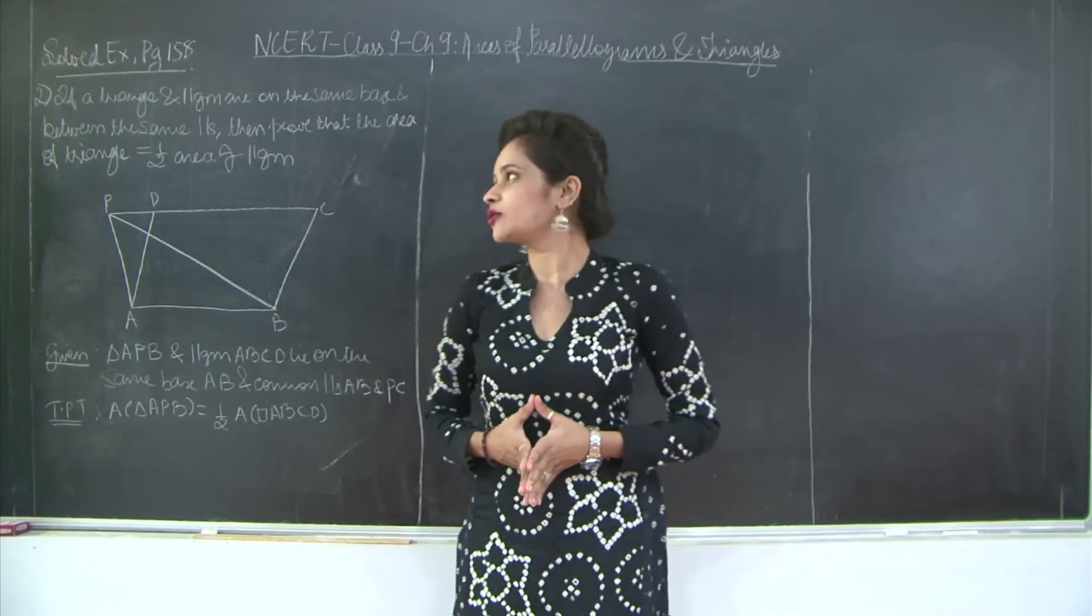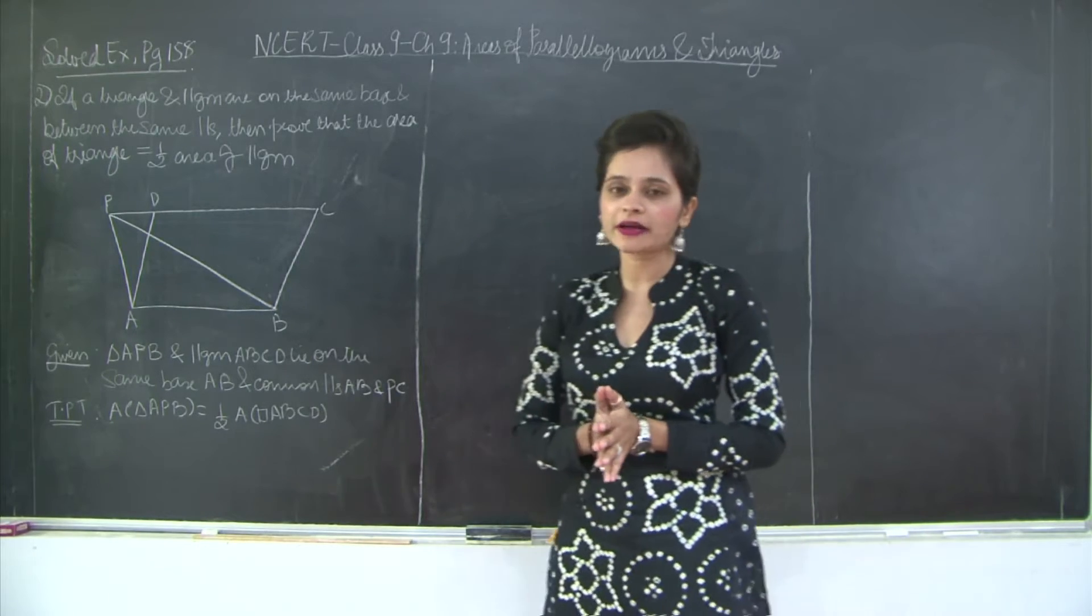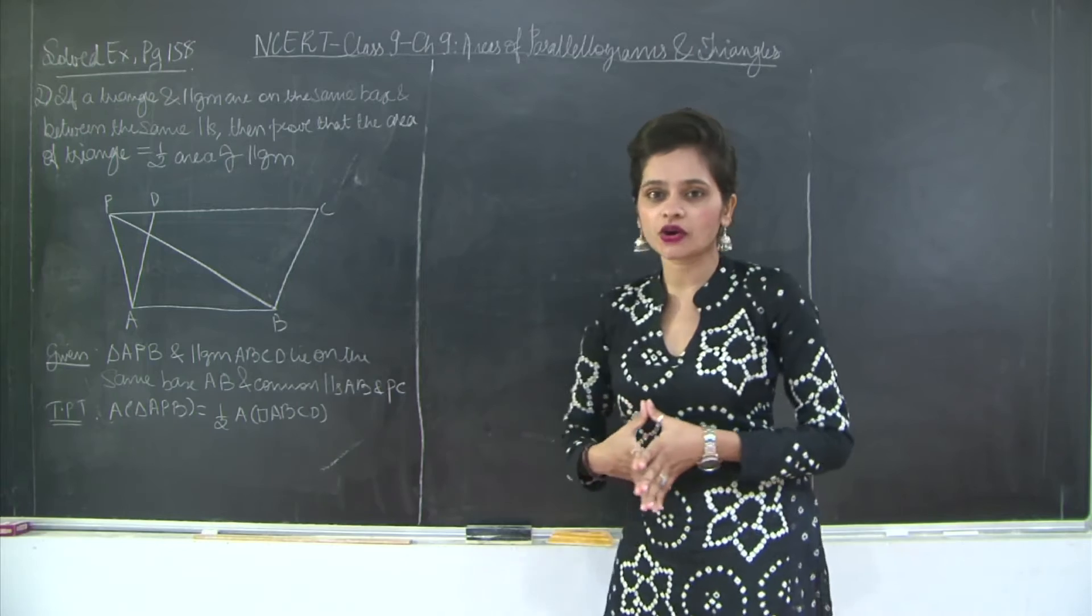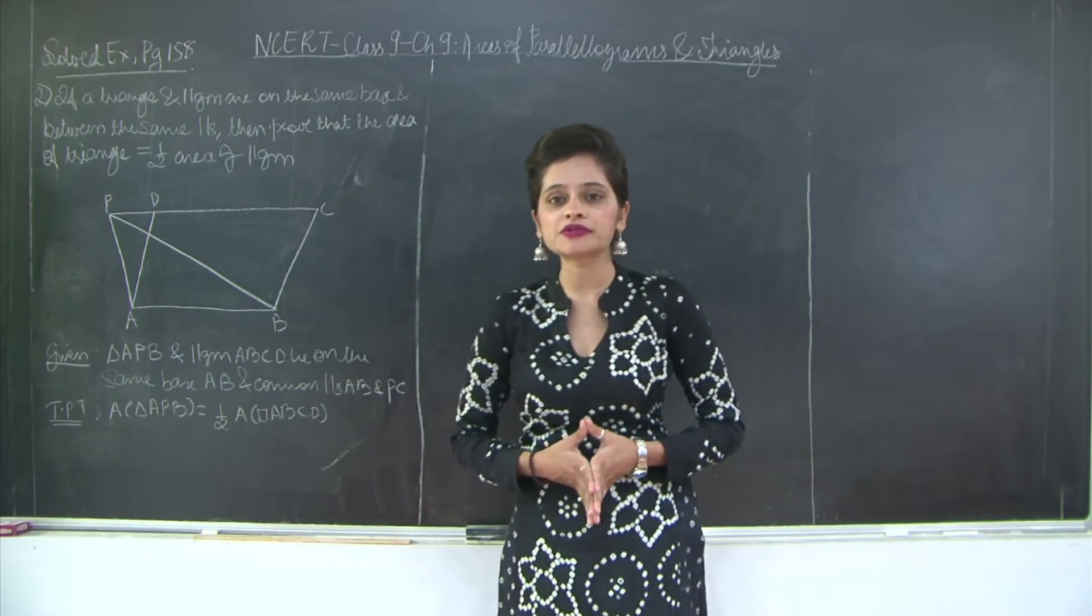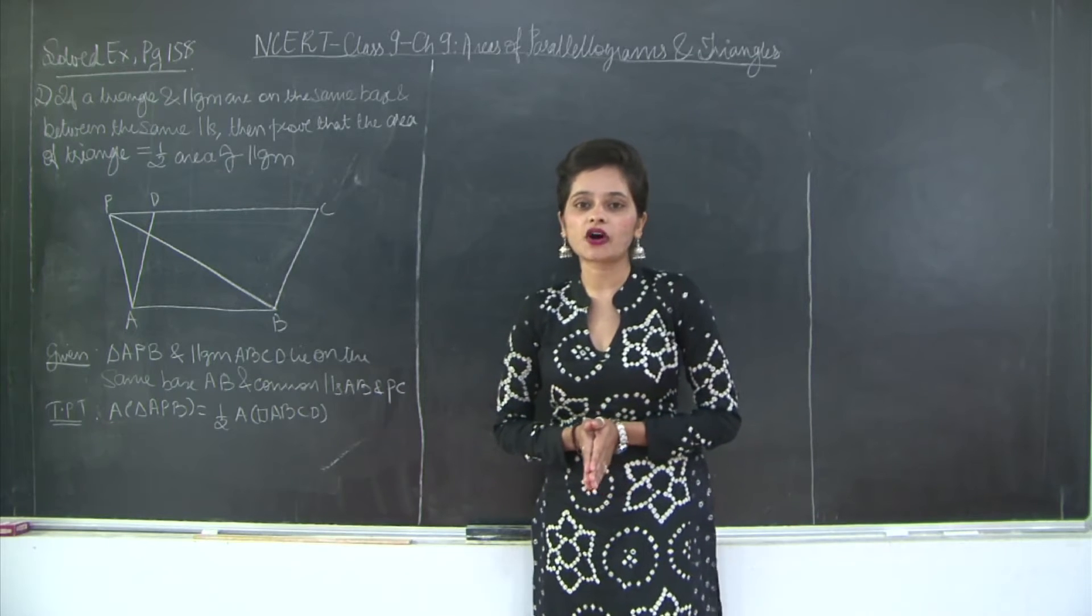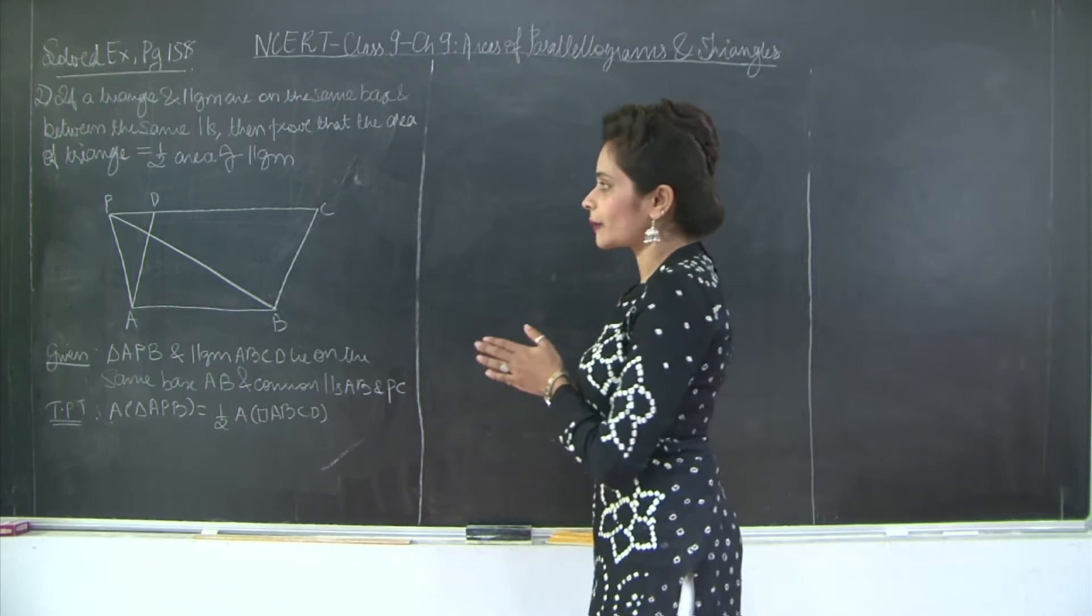Hello students, let us take a look at the second solved example of chapter 9, areas of parallelograms and triangles. This is based on the same concept that we did in the previous class: parallelograms on the same base and between common parallels are equal in area.